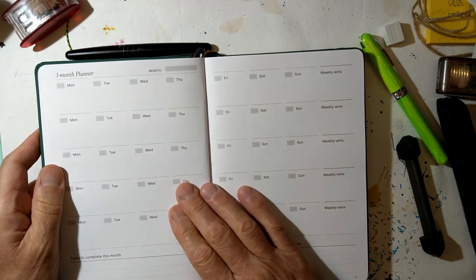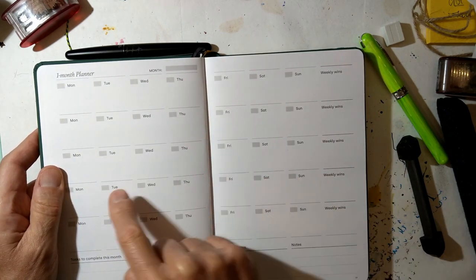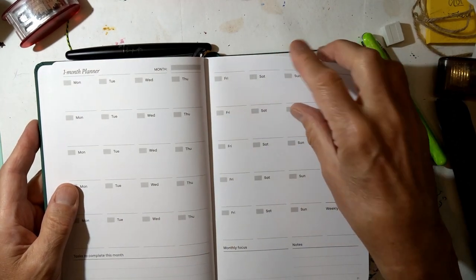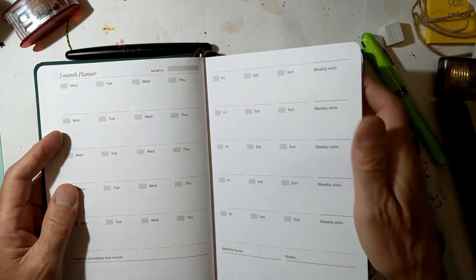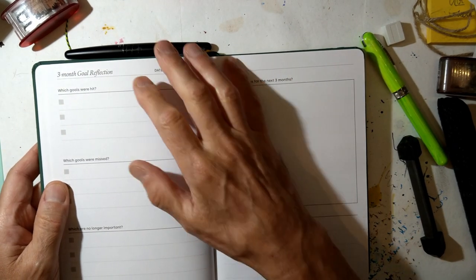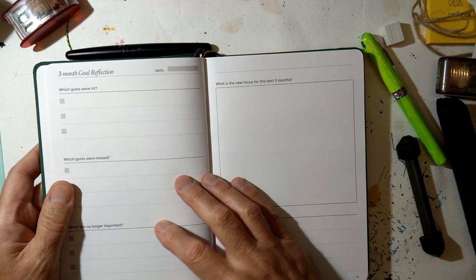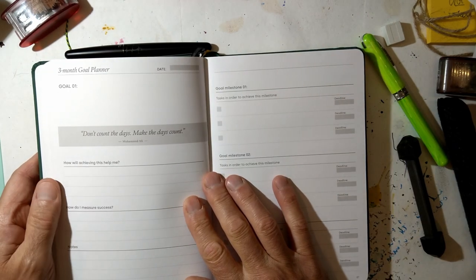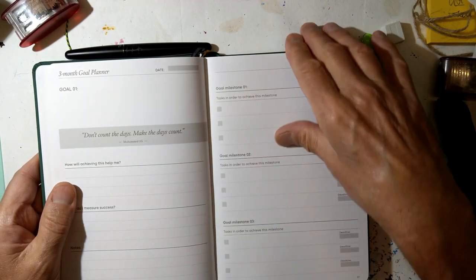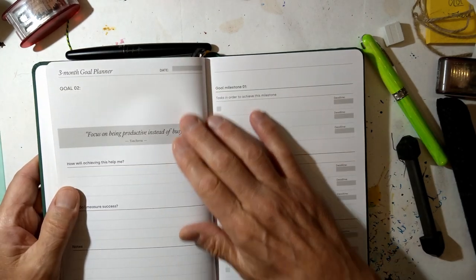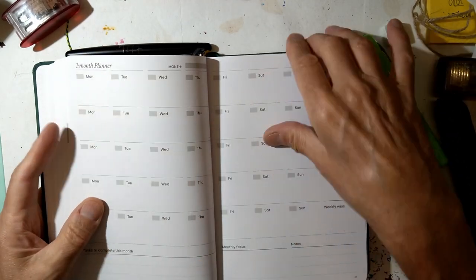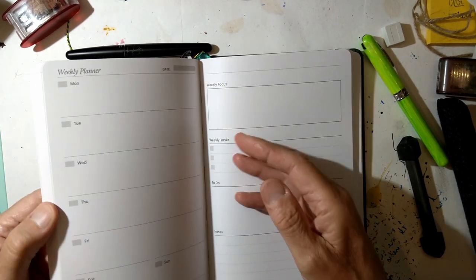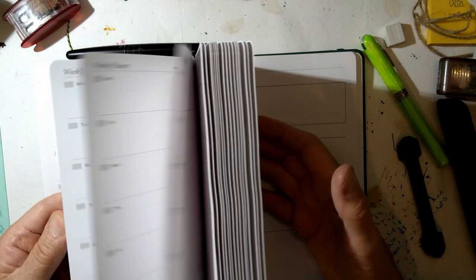Then you've got the one month planner, so you can plan out what you want to do per week. One, two, three, four, five. Tasks to complete, monthly focus, etc. One month planner for each of three months. And then, after the three months, you've got an area where you can reflect. And then, what is the new focus for the next three months? Goal milestones, goal two milestones, goal three, etc. So you can see how this is laid out, you can see how the whole thing operates.